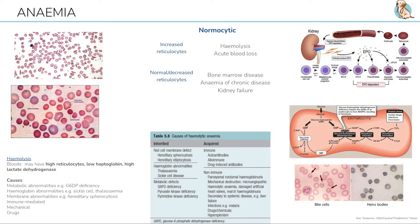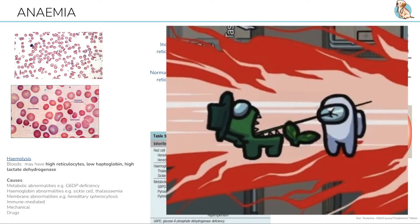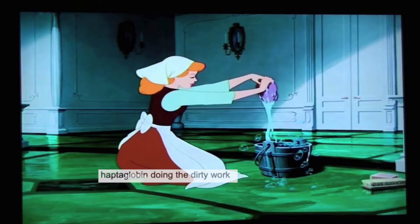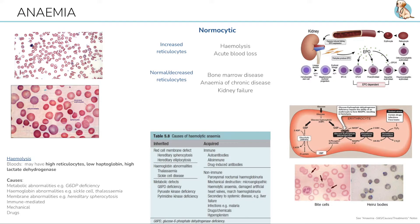Hemolysis, as the name suggests, is the destruction of red blood cells. Lab tests may show high reticulocytes, low haptoglobin, and high lactate dehydrogenase. Lactate dehydrogenase is high when there is tissue destruction, and haptoglobin mops up haemoglobin from the circulation. If there is lots of destruction of red blood cells, haptoglobin has to go clean it up, so it gets depleted.